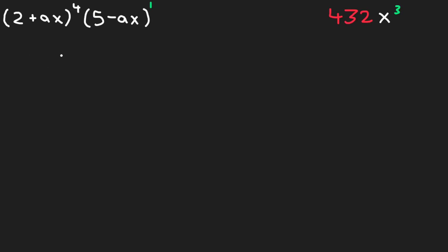Okay, so we have the expression 2 plus ax all to the power of 4 times 5 minus ax to the power of 1. Now, we don't have to write the 1 there, but that's just to remind us that we don't need to use the binomial expansion theorem to simplify 5 minus ax.